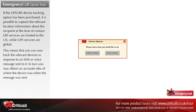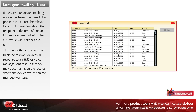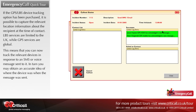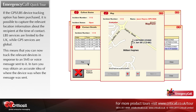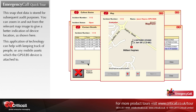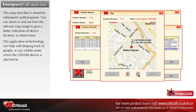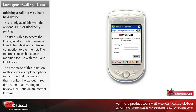If the GPS/LBS device tracking option has been purchased, it is possible to capture the relevant location information about the recipient at the time of contact. LBS services are limited to the UK, while GPS services are global. This means you can track relevant devices in response to an SMS or voice message sent to them, and obtain an accurate idea of where the device was when the message was sent. This snapshot data is stored for subsequent audit purposes. You can zoom in and out from the relevant map image for a better indication of device location. This technology can help with keeping track of people or any mobile assets to which the GPS/LBS device is attached.